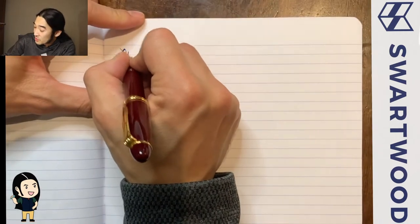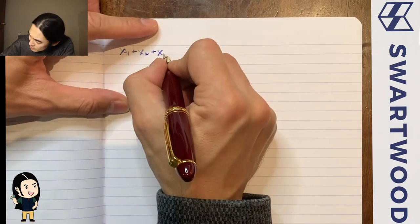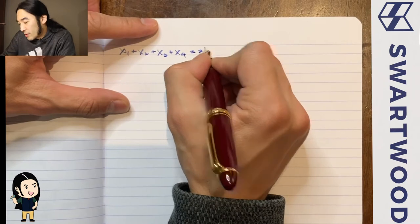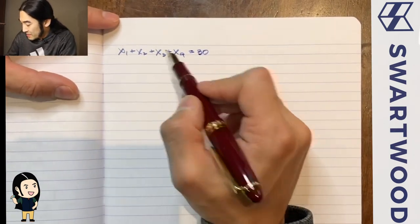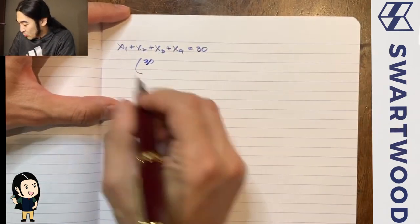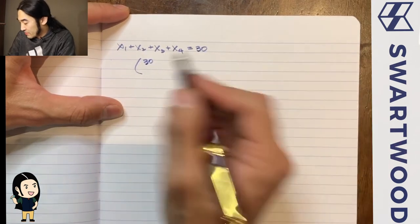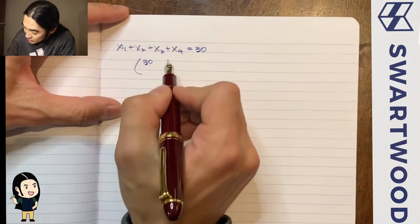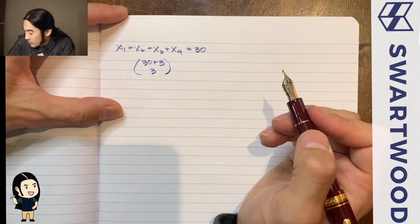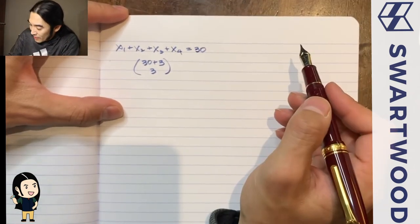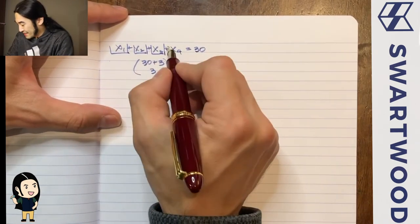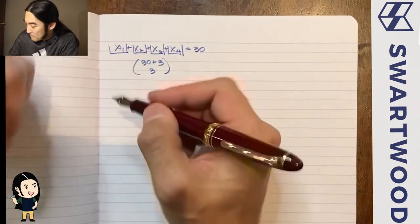Now let's look at the number of solutions to x1 + x2 + x3 + x4 = 30. If these variables can be any non-negative integer, it's equivalent to putting 30 balls into 4 containers. To identify 4 containers you need 3 dividers, so it's 30 + 3 choose 3. This is the same problem as before, just with 4 containers instead of 3.